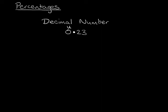This column is called tenths and this one is called hundredths. So we've got two tenths and three hundredths, or we could say there are twenty-three hundredths. Twenty-three hundredths is the same as twenty-three over one hundred. How many percent is that? Twenty-three percent. It was twenty-three percent yesterday and it's still twenty-three percent today.